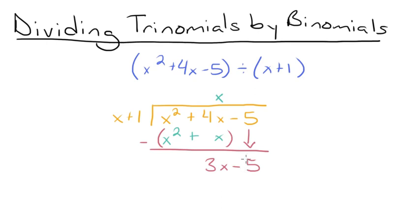And now we do it again. We're going to see how many times the first term of our divisor, x plus 1, goes into the first term of our new binomial, 3x minus 5. So how many times does x fit into 3x? x fits into 3x three times, because x times 3 is 3x. So we're going to add 3 and put that right up here.